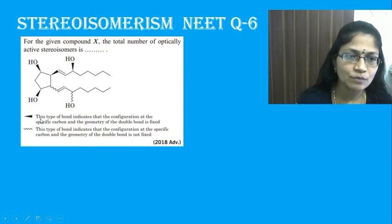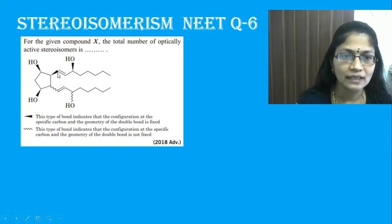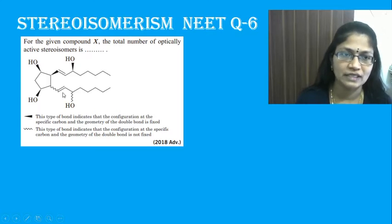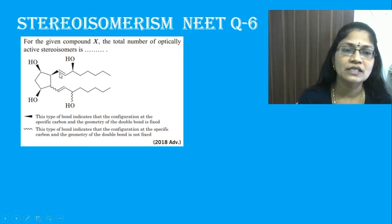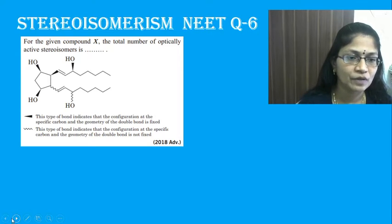This bond shows that the configuration of the specific carbon and the geometry of the double bond is fixed. But here, the configuration of the specific double bond is not fixed — this shows it is not fixed, and this shows it is fixed. We have three asymmetric carbon atoms.